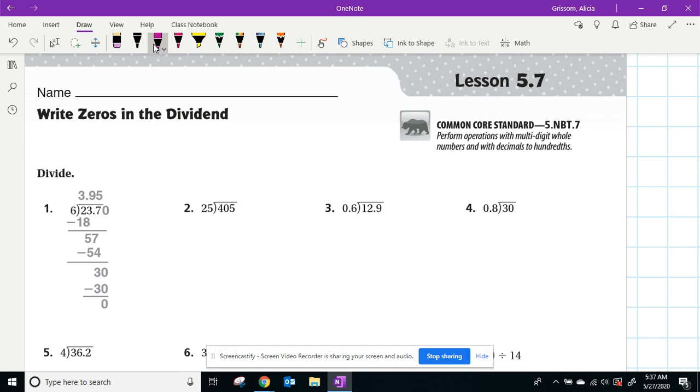So there are two types of problems, some with decimals already in the dividend or the divisor, as we see in number three or number four. And number two, the second type of problem, there is no decimal, but you will add one in the dividend in order to complete the division calculation.